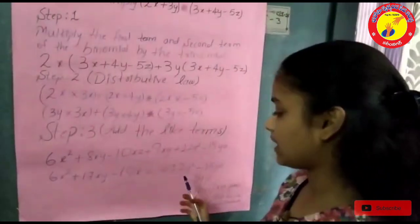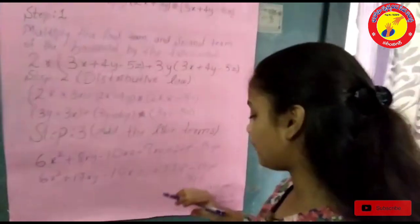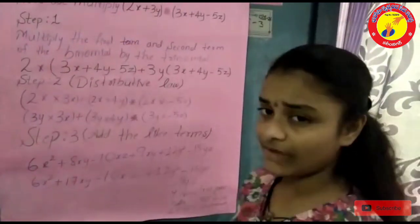Plus 12y squared. There is no other y squared here, so we have to write it as is. Minus 15yz.